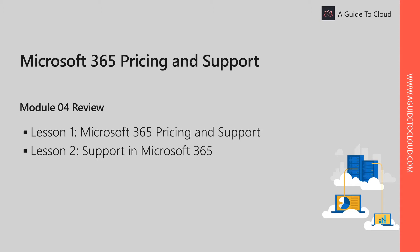In the last module, Module 4, we talked about Microsoft 365 pricing and support. We covered the different plans available within Microsoft 365 — the Enterprise plan including E3 and E5, the Business plan, the F1 plan, and the Academic/Educational plan. In the second lesson, we discussed different types of support, how to raise a support issue, and how to check service level health in Microsoft 365 services.